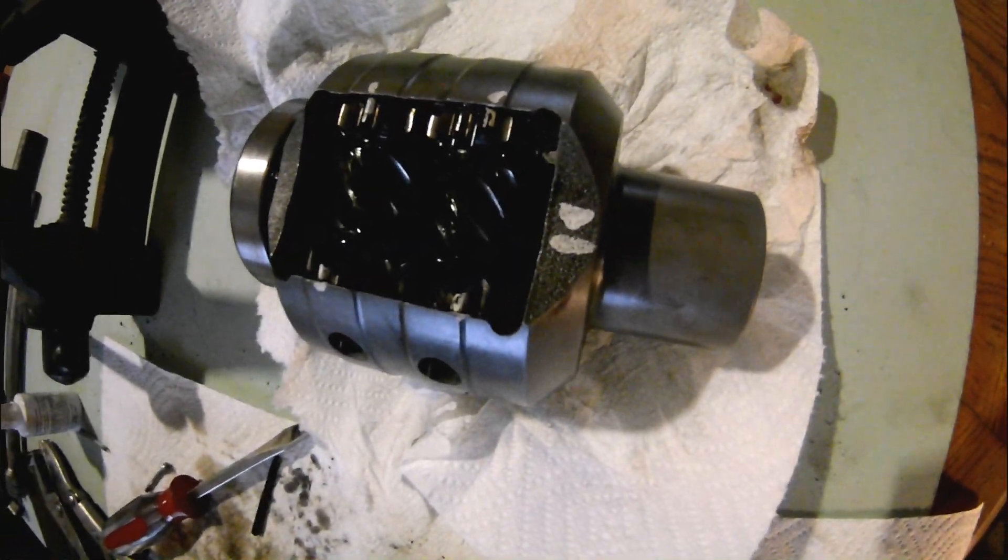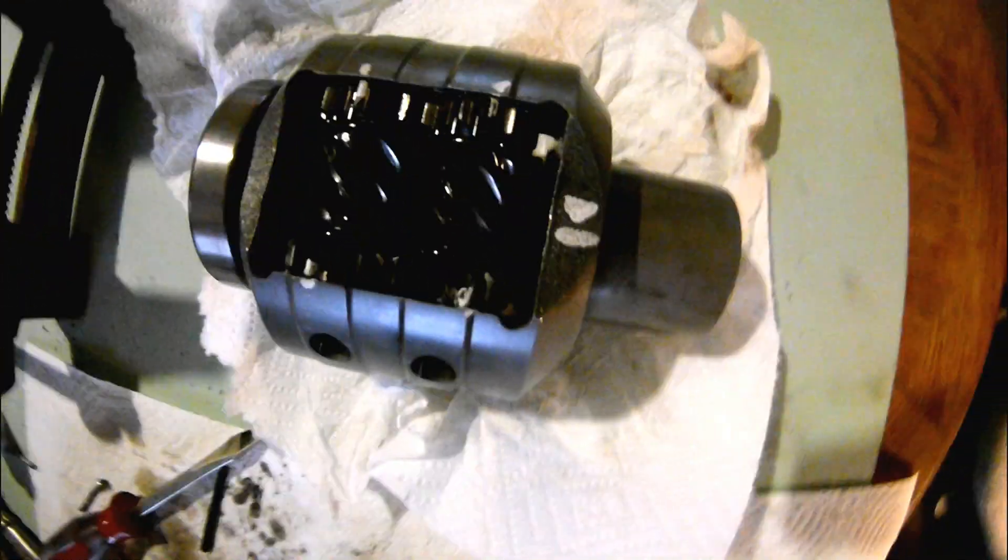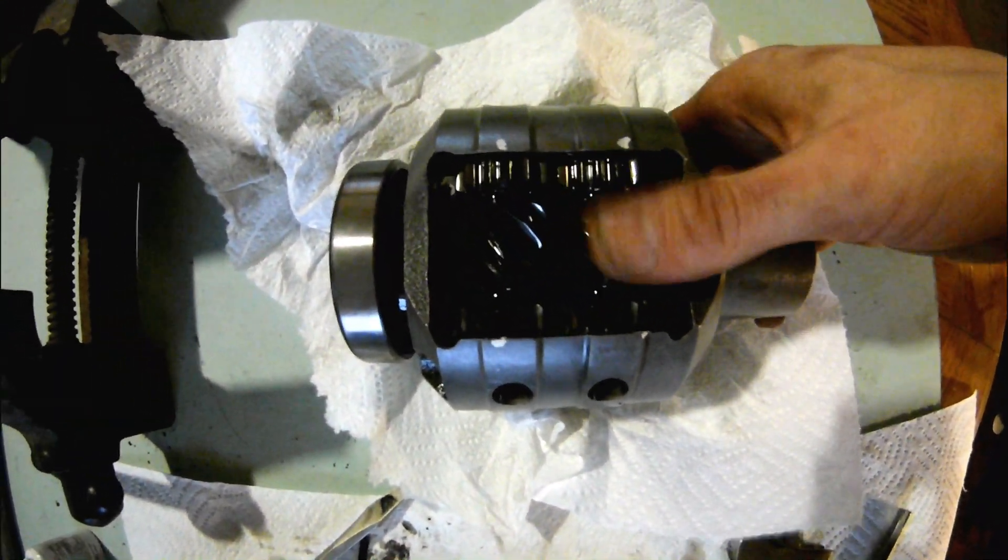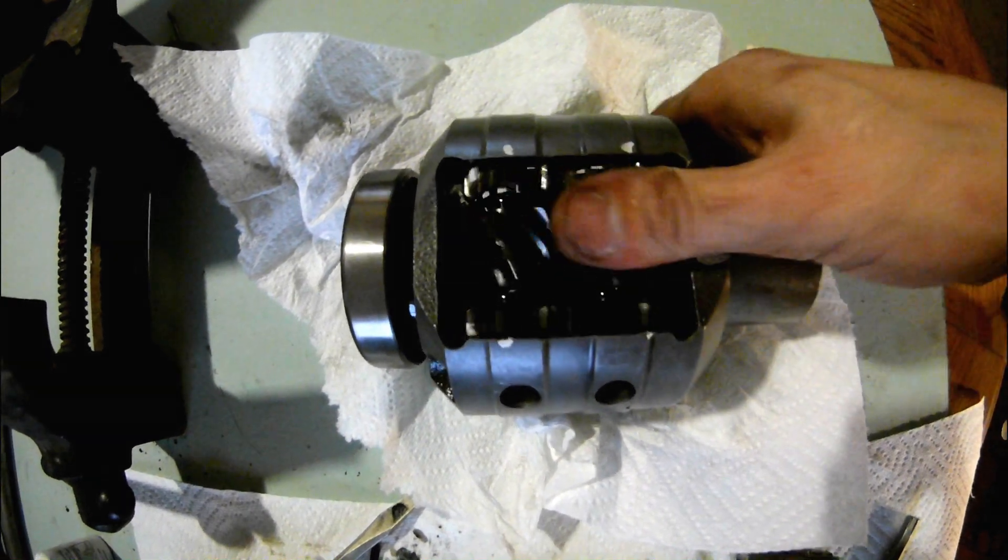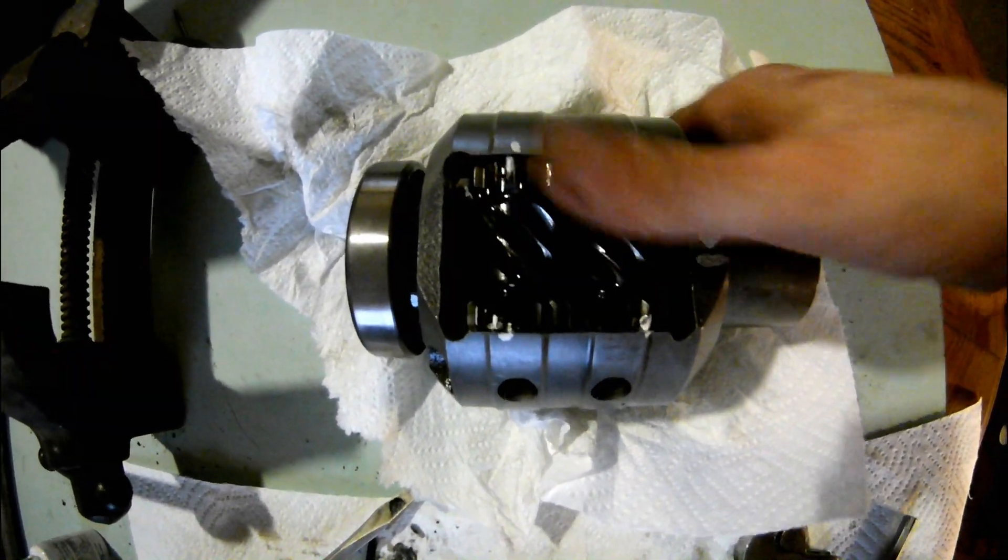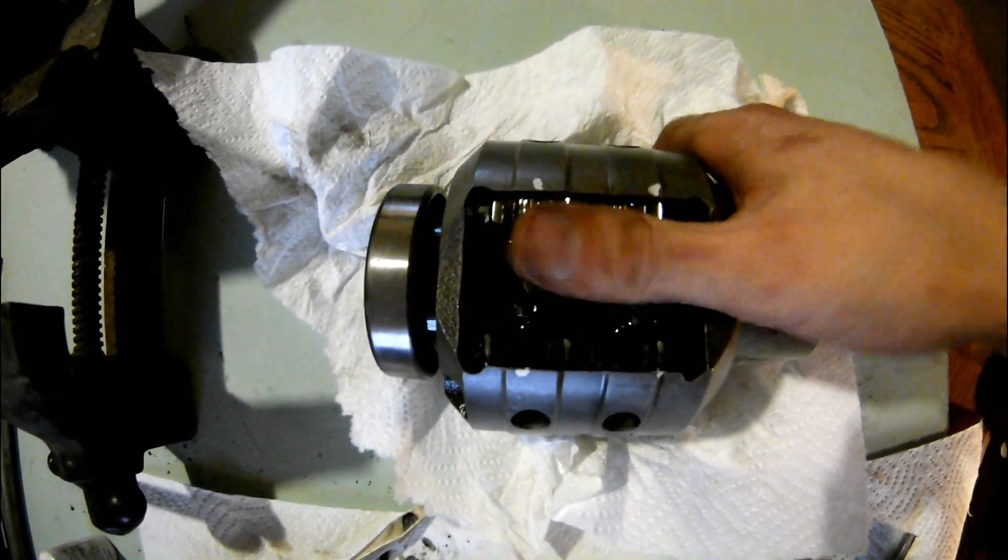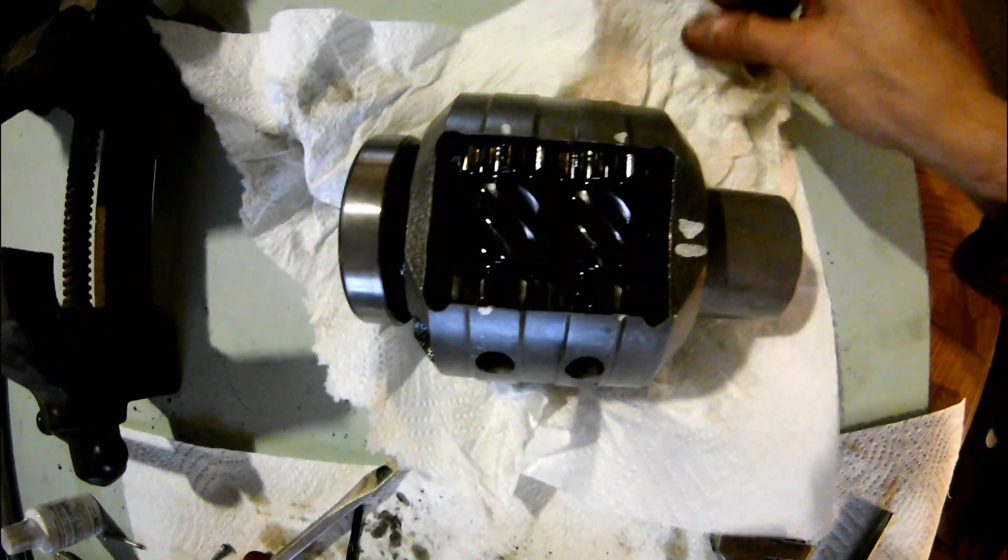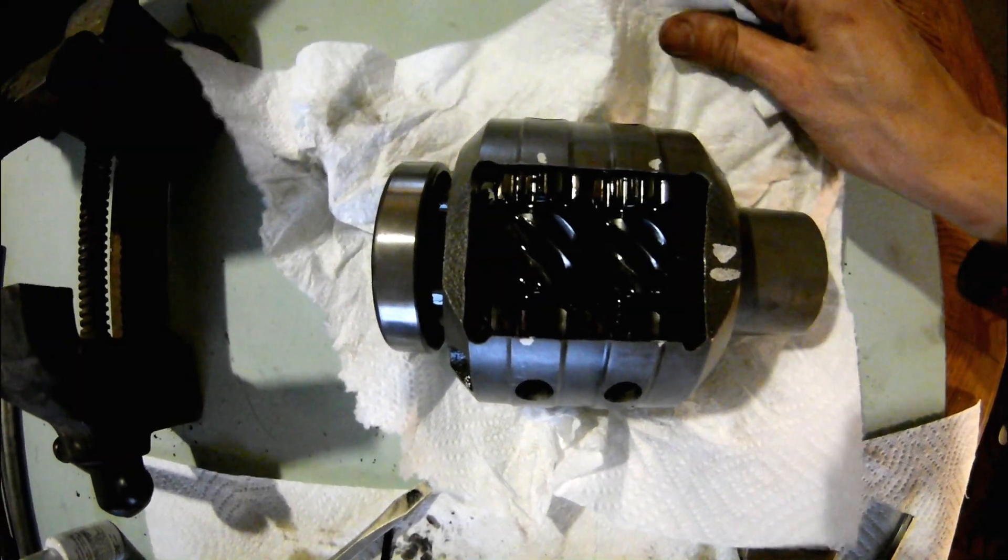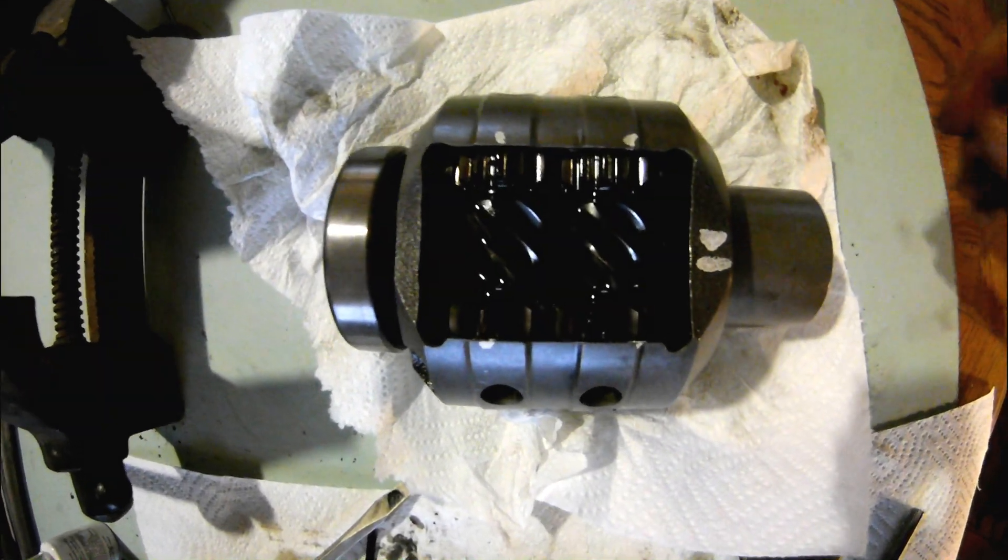And there it is, four to one modded diff. You can test it one more time to make sure there's no binding after everything's all assembled and the spiral pins are back in. Looks like I did an okay job. I'm gonna blast this with some brake cleaner and then it's going to get put in tonight.